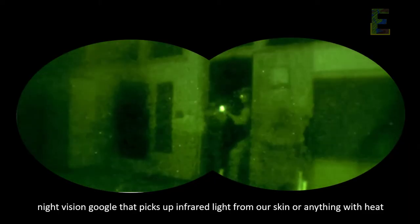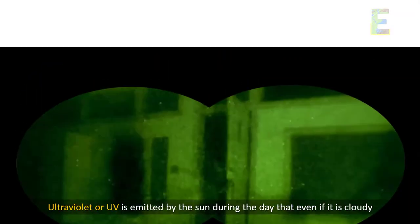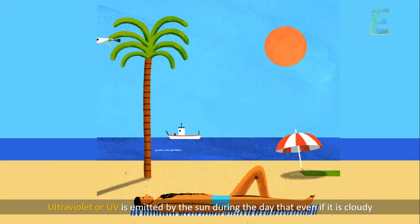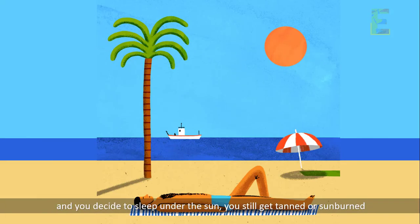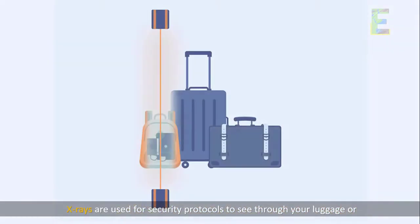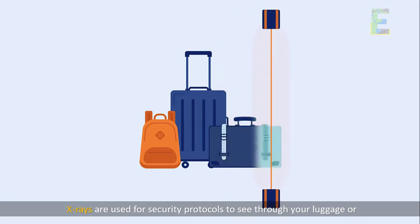Ultraviolet or UV is emitted by the sun during the day, so even if it's cloudy and you decide to sleep under the sun, you still get tanned or sunburned. X-rays are used for security protocols to see through your luggage or even through your muscles for medical purposes.